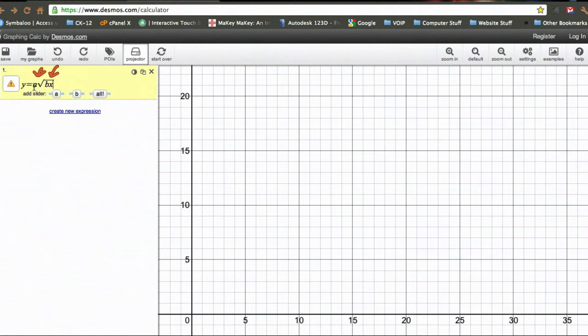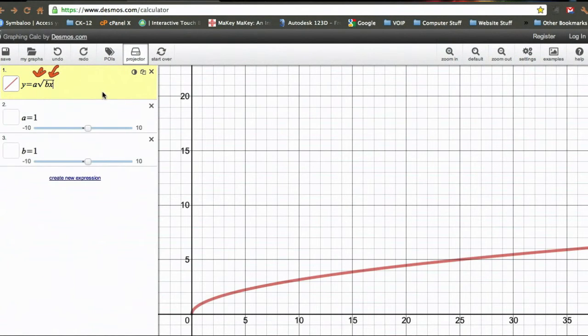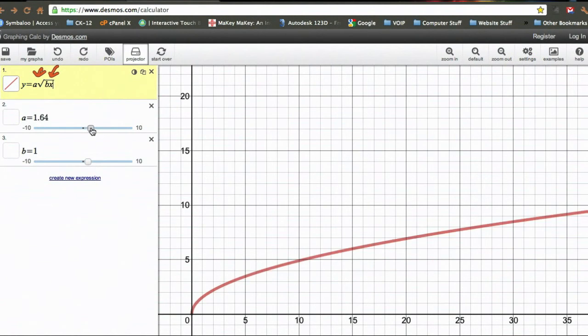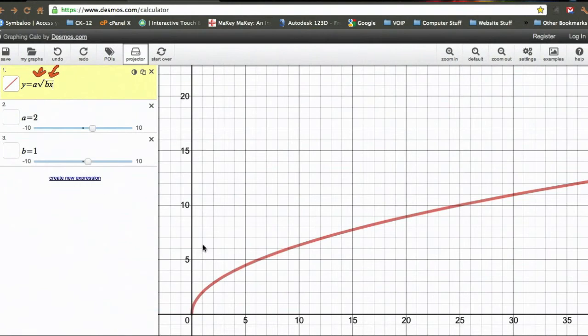So the other thing the Desmos calculator does that I really like is when you put in an extra variable, it asks you if you want to add a slider. So I'm going to just say all here, and it's going to add a slider for a and b. Now I can just drag this slider left to right, and it'll change the values for a. So right now it's graphing y equals square root of x. If I change this a to two, now we have y equals two square roots of x.